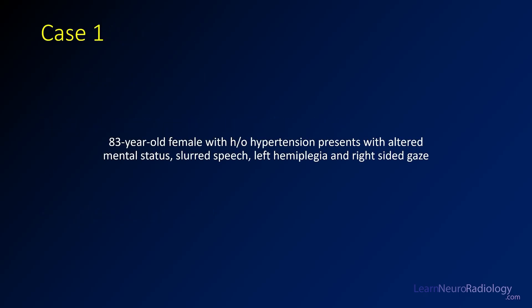Case one is an 84-year-old woman with hypertension. She has altered mental status, slurred speech, left-sided hemiplegia, and a right-sided gaze palsy. Let's dive right into this case.